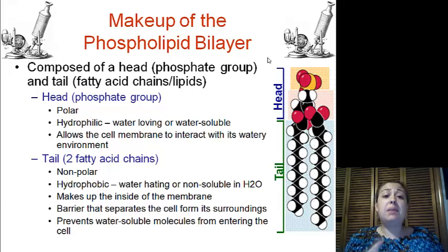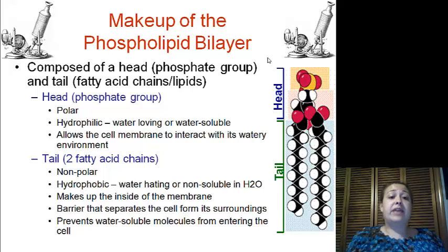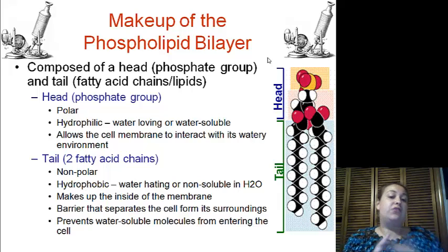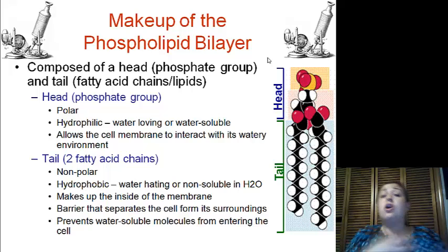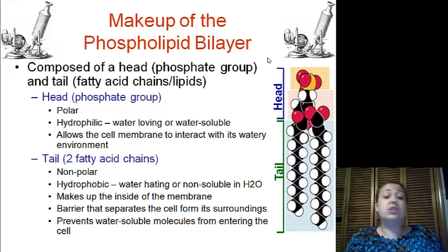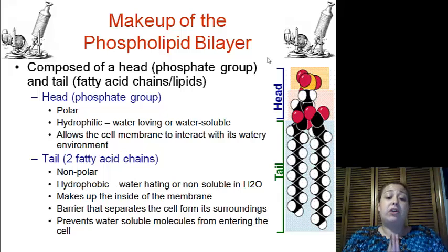So again, the makeup of the phospholipid bilayer has the head and the tail portion. The head is the phosphate group — it's polar, hydrophilic meaning water loving — and can interact with water in the environment. And the tail, which is nonpolar or hydrophobic, does not interact with water or polar molecules. This makes it a really good barrier.